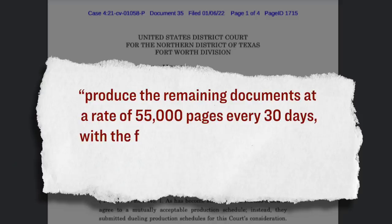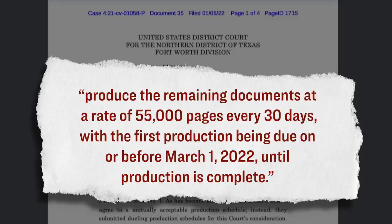With this rationale as the basis, the judge ordered that the FDA must produce over 12,000 pages on or before January 31st, and then subsequently, the agency must, quote, produce the remaining documents at a rate of 55,000 pages every 30 days, with the first production being due on or before March 1st, 2022, until production is complete. When you actually do the math here, when you divide up the total number of pages by 55,000 pages per month, you get about eight months, meaning that by either August, September, or by latest October, we should have all of these documents publicly available.